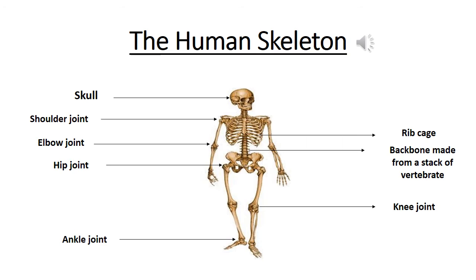A big cage made up of rib bones supports and protects your heart and lungs.